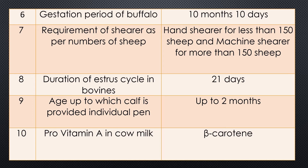Question eight: Duration of estrus cycle in bovine, both in cattle and buffalo. The answer is 21 days of estrus cycle.